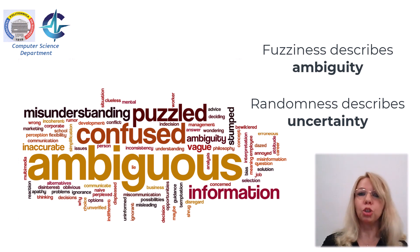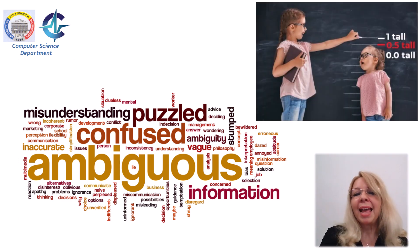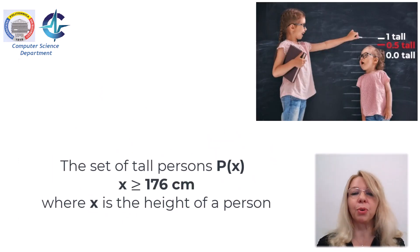Let us consider an example: tall. Tall is an elastic property. To define the set of tall men as a classical set, one would use a predicate that, for example, is p of x and x is more than 176 cm, x being the height of a person. And this is an abrupt approximation to the concept tall.